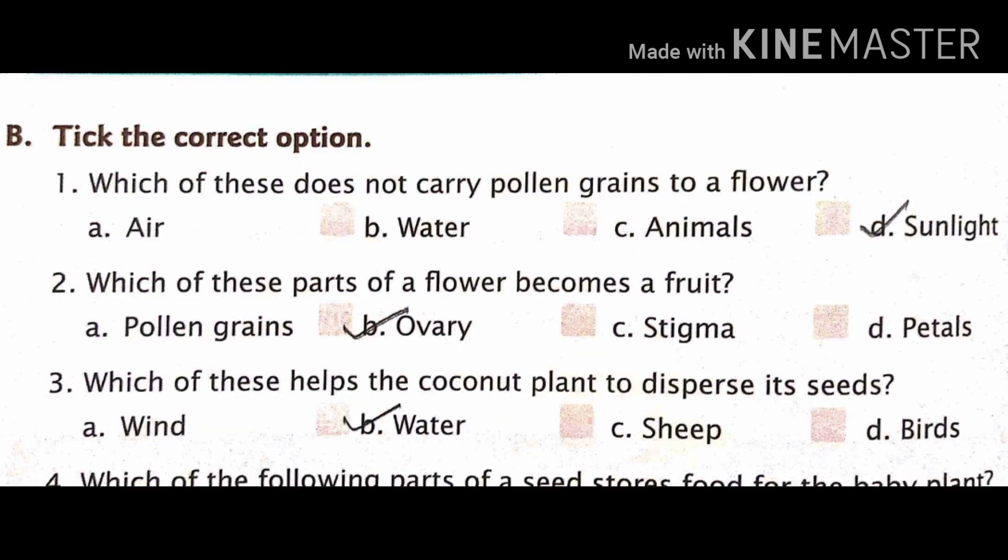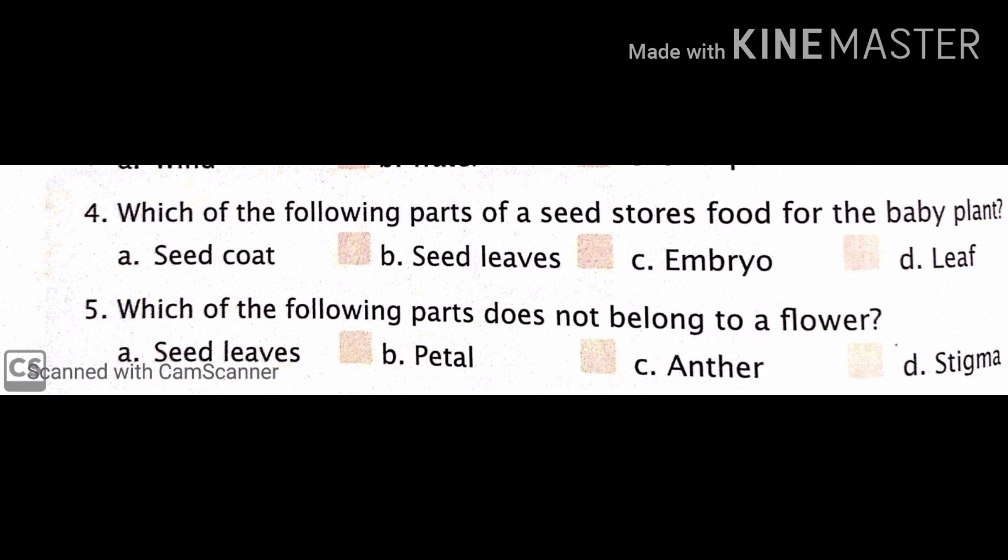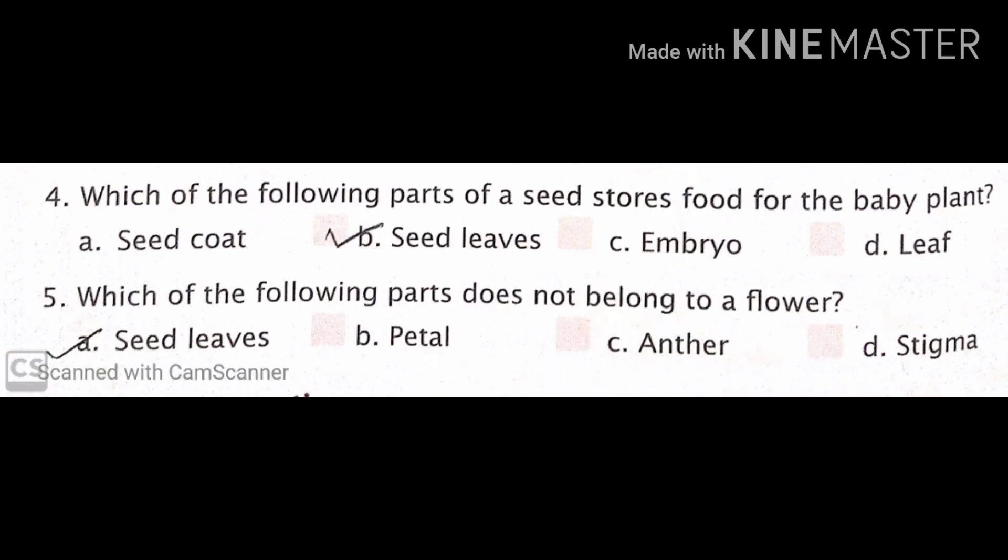Fourth question, which of the following parts of a seed stores food for the baby plant? Option seed coat, seed leaves, embryo, and leaf. And what is the right answer? Yes, the right answer is seed leaves.